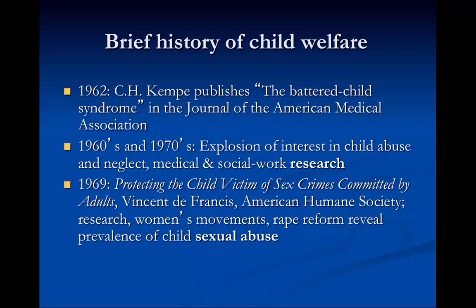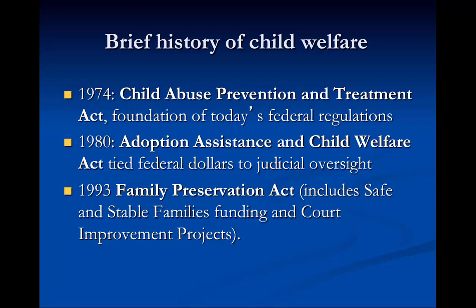In 1969, 'Protecting the Child Victim of Sex Crime Committed by Adults' brought to light the movement around sexual abuse and its impact on children. In 1974, the Child Abuse Prevention and Treatment Act — which is really the foundation of today's federal regulations, commonly referred to as Title IV-E regulations around child welfare — was enacted. In 1980, the Adoptions Assistance and Child Welfare Act tied federal dollars to judicial oversight, and this is where compliance around child welfare was really born.